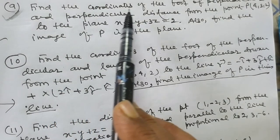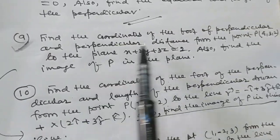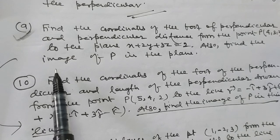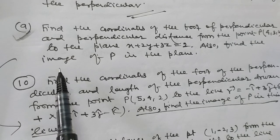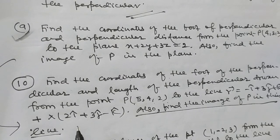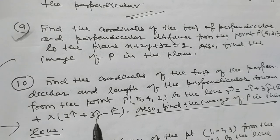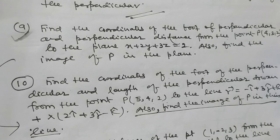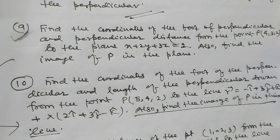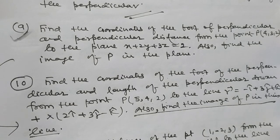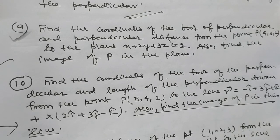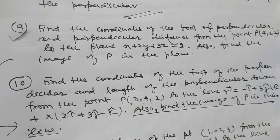Find the coordinates of the foot of the perpendicular drawn from the point P(4, 3, 2). Also find the image of P in the line. Problems number 11 and 12 are very technical, so I want to discuss only this problem. I do not want to solve those problems because it will kill time. I want to save time so that I can give emphasis on the present trend of the question paper.